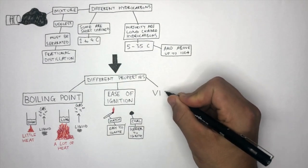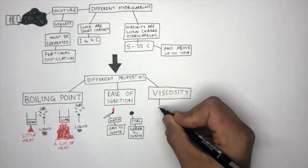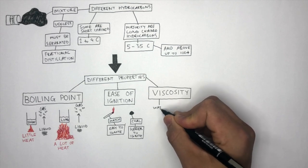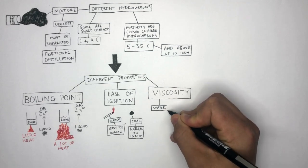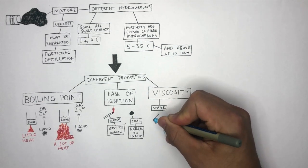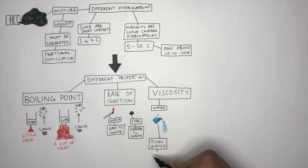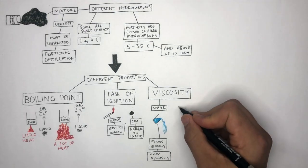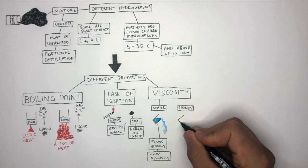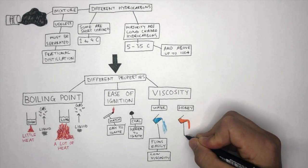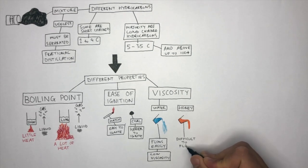The last property we'll look at is viscosity. To understand what viscosity means, let's take a look at how water flows. If you pour water out of a cup, it flows easily. Therefore, we say it has low viscosity. Whereas if you were to pour honey out of the same cup, it flows slowly and is difficult to flow. Therefore, we say it has high viscosity.